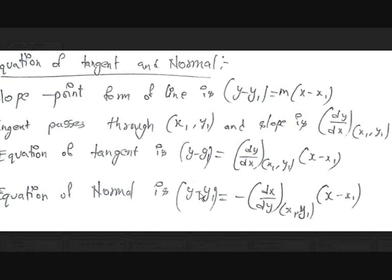Now let's see the equations of tangent and normal at a particular point. To find these equations, we know two things about each line: the point through which the line passes, which is (x1, y1), and the slope. Since we have both a point and a slope, we use the point-slope form of a line: y - y1 = m(x - x1).